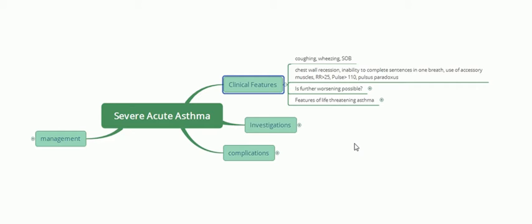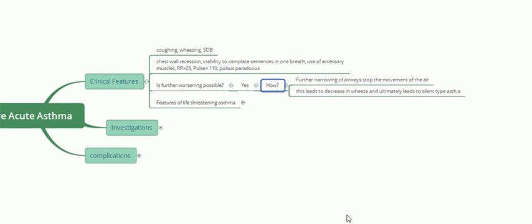So you have a clinical picture of coughing, wheezing, shortness of breath, chest wall recession, use of accessory muscles, tachycardia, and pulsus paradoxus. Further worsening is possible — continuous inflammation blocks all the airways, stopping air movement. When air cannot move through the narrowed airways, wheeze disappears. Initially wheeze was present, but now with silent airways on auscultation there is a silent chest — this is called silent-type asthma.